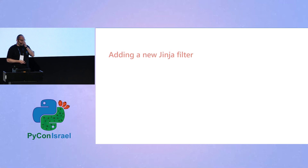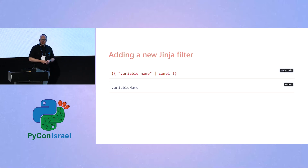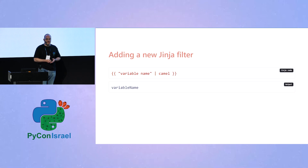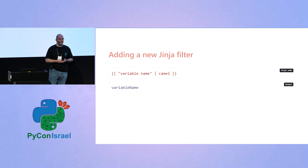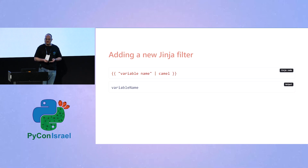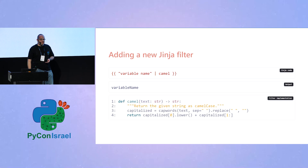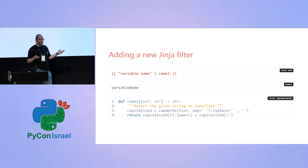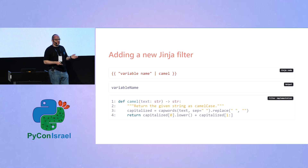Here's an example of a new Jinja filter I created for this demonstration: a camel case filter, which takes words and creates camelCase. This is very useful in hardware engineering, where code often involves register names and memory identifiers in camelCase. The implementation is straightforward: take the string, split it based on a separator, capitalize every first word, join them together, remove whitespace, and lowercase the first character.